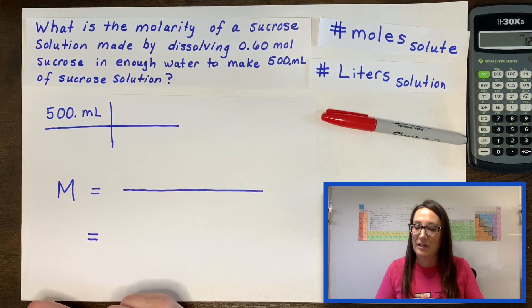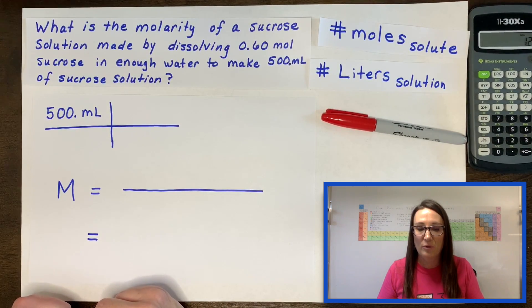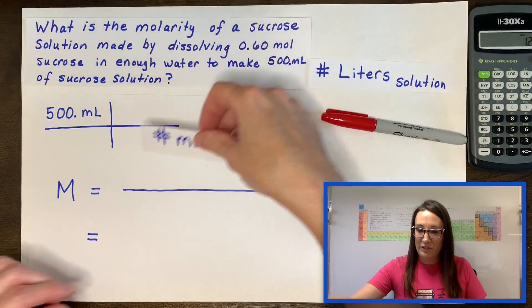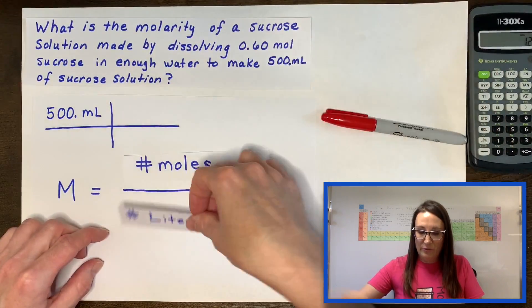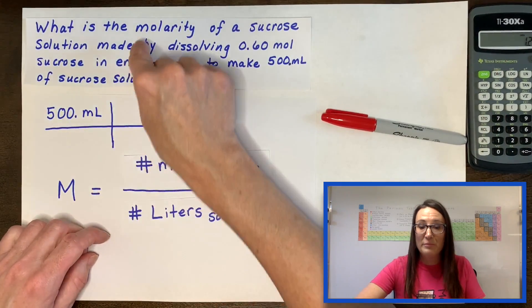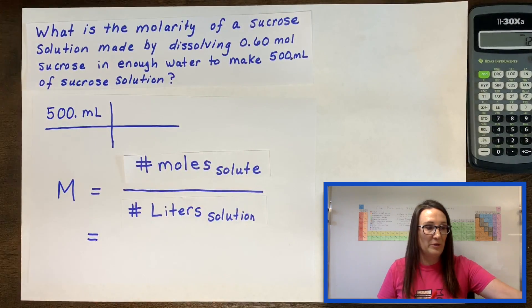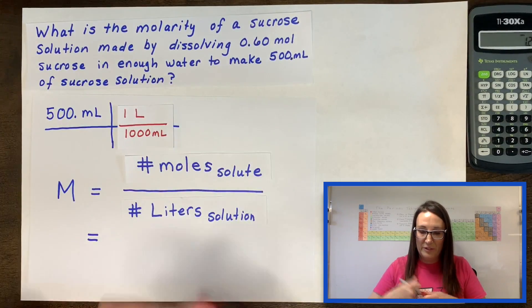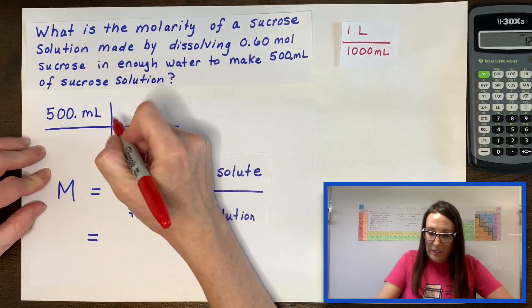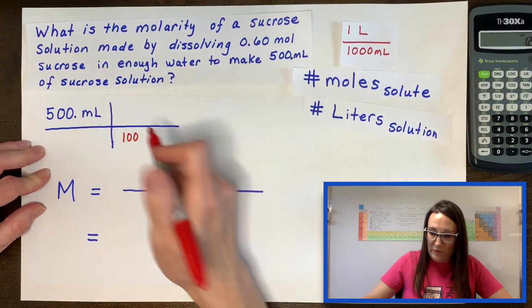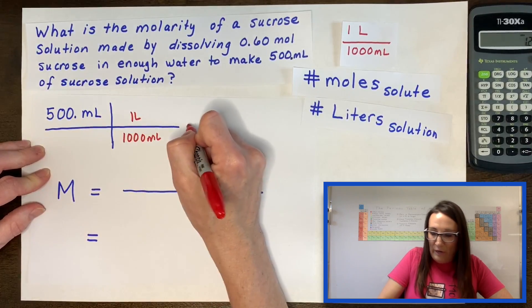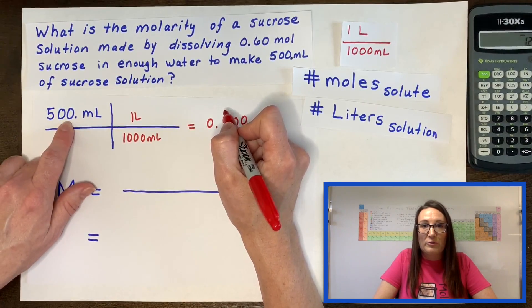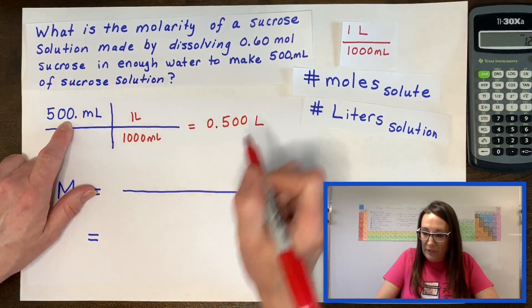Here's our second problem. What's the molarity of a sucrose solution made by dissolving 0.6 moles of sucrose in enough water to make 500 milliliters of solution? Do I have the moles? I do, it's 0.6. Do I have liters? I do not. I have 500 milliliters. The first thing I have to do is convert my milliliters to liters. With your conversion card, you can see that milliliters needs to be in the denominator, liters in the numerator. You're going to divide by 1,000. This equals 0.500.